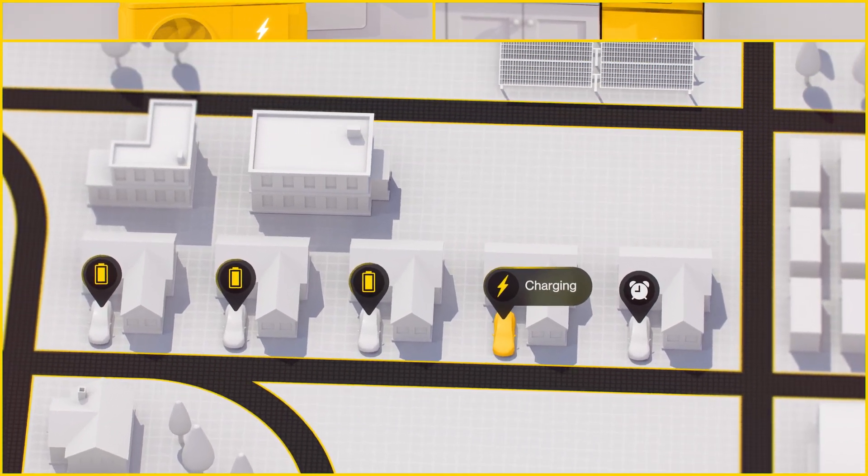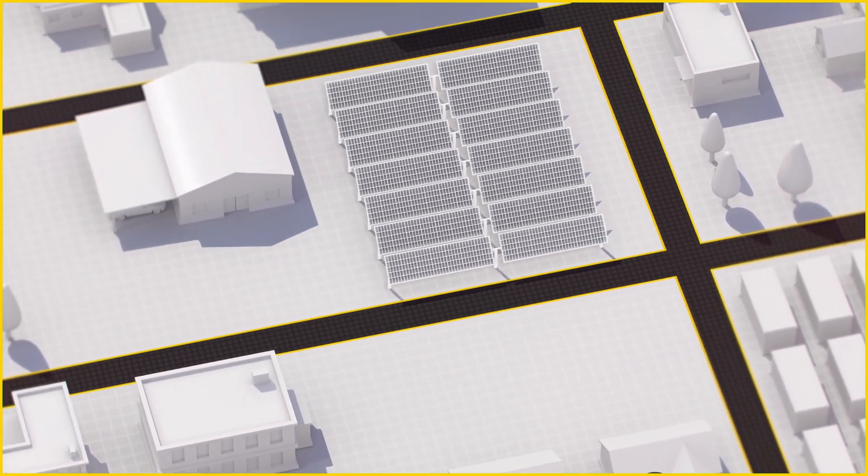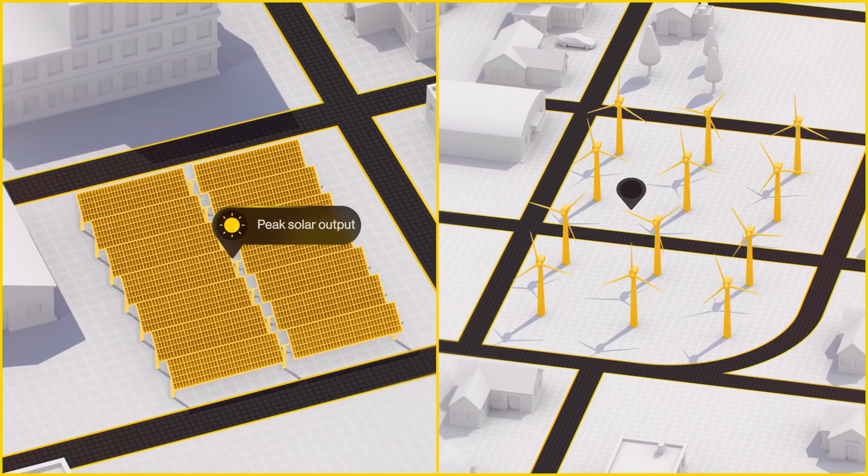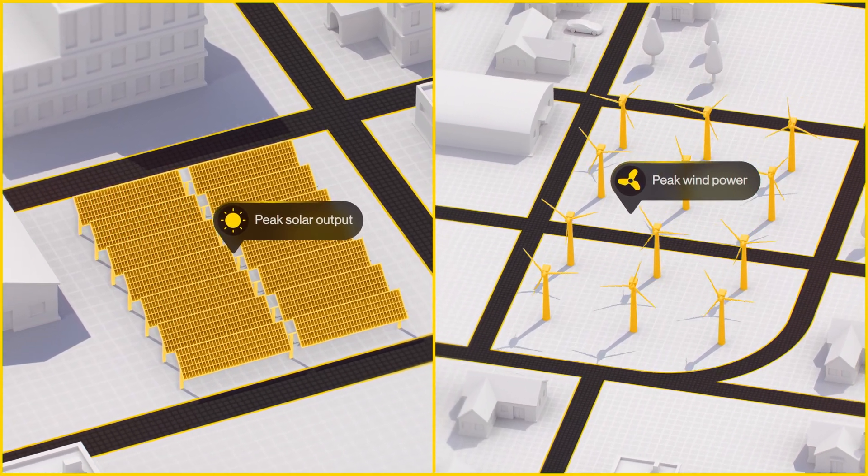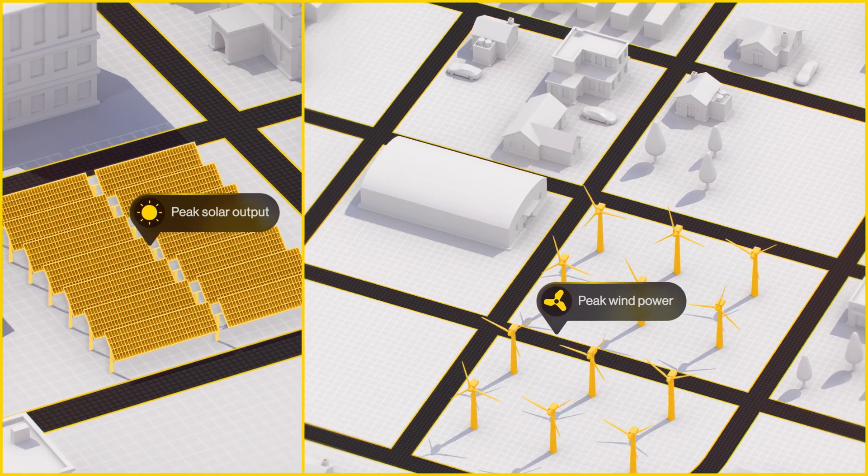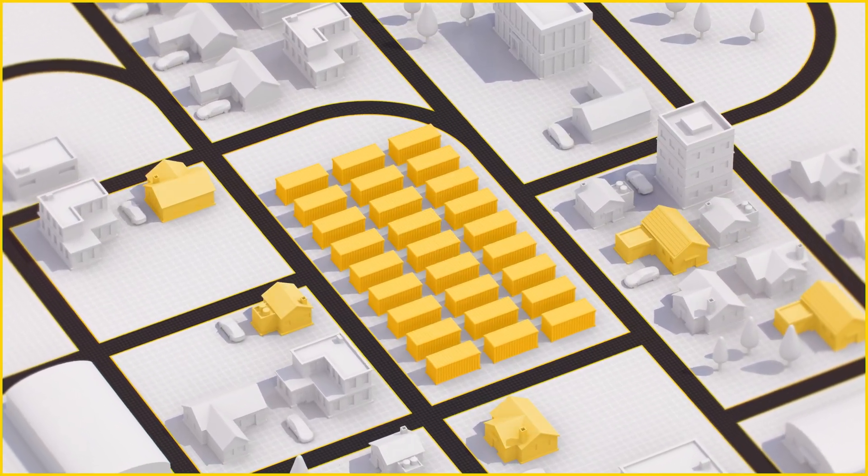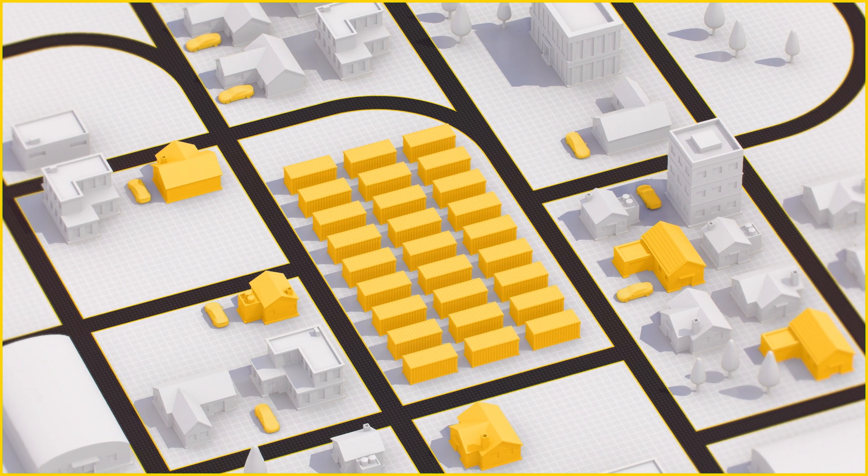And it's not just about shifting our energy usage, but also banking it for later. When the sun's shining, all the winds blowing and supply is high, a smart grid will make intelligent decisions to store excess energy in grid scale batteries, in home systems and even in electronic vehicles.